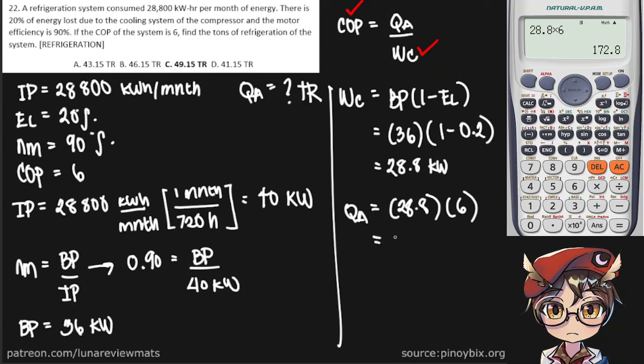172.8 kilowatts. Now, if you remember, there are 3.52 kilowatts per ton of refrigeration. So all we need to do to convert this into tons of refrigerant is divide by 3.52. And that gives us an answer of 49.1 tons of refrigerant. And that is our final answer.